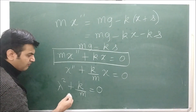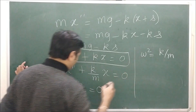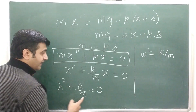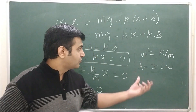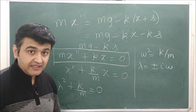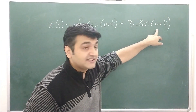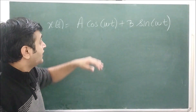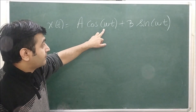With ω² = k/m, the auxiliary equation λ² + ω² = 0 gives λ = ±iω, which are complex roots. Since the real part is zero, the general solution is x(t) = A·cos(ωt) + B·sin(ωt). The e^(0·t) term does not appear. This is the general solution of the undamped mass-spring system.